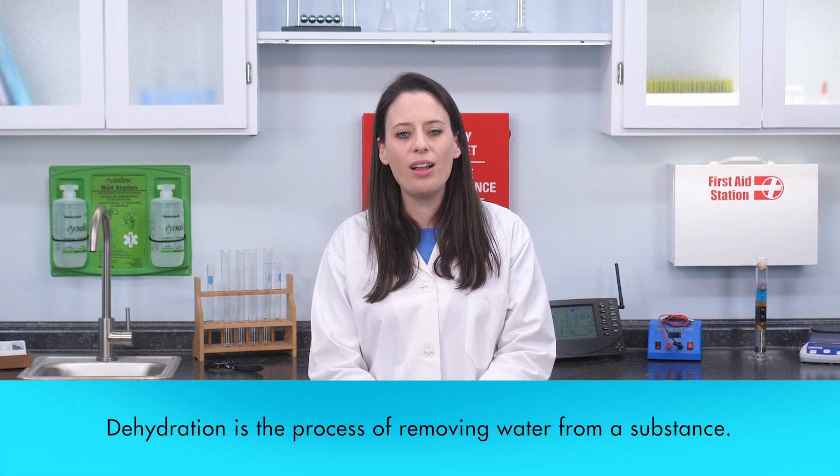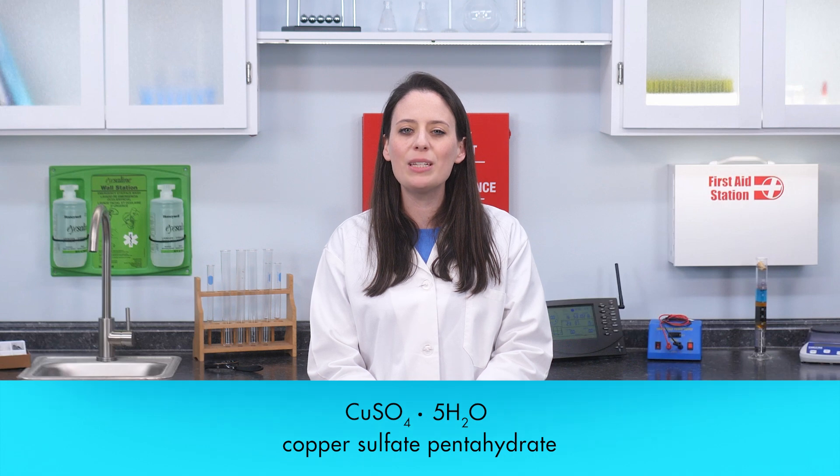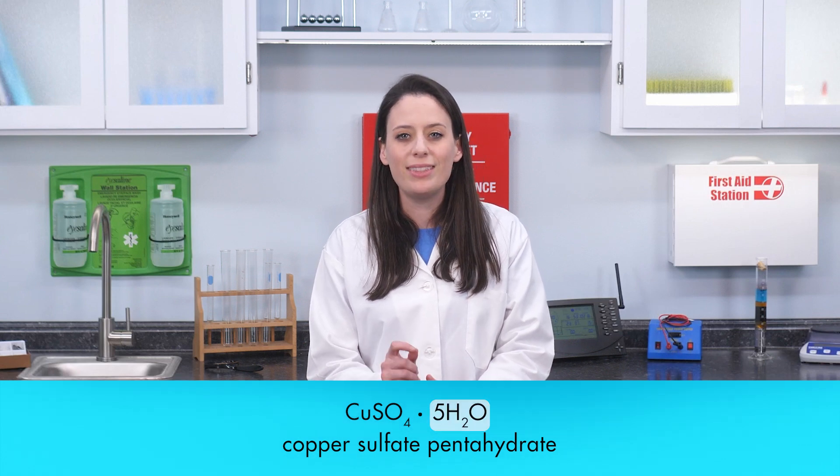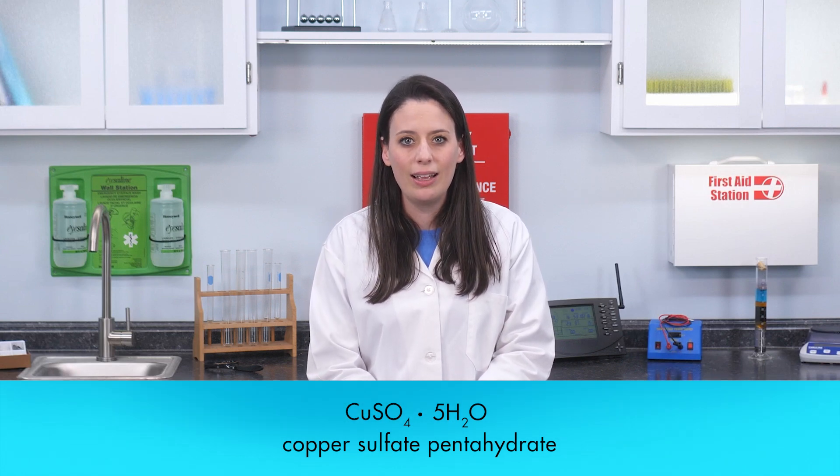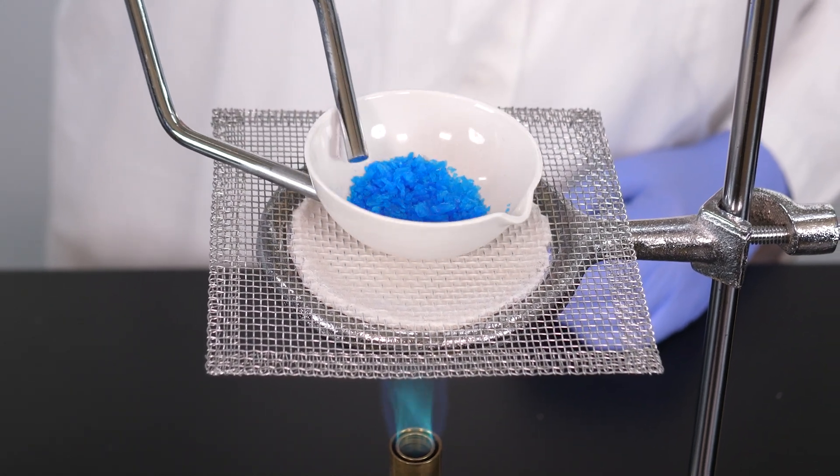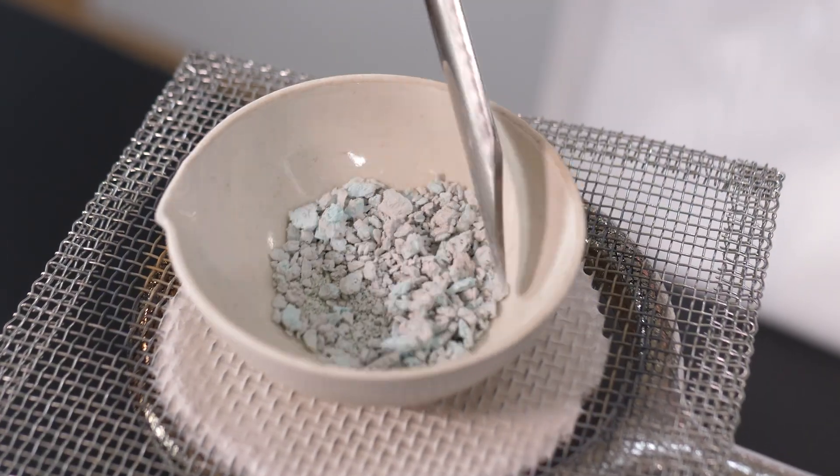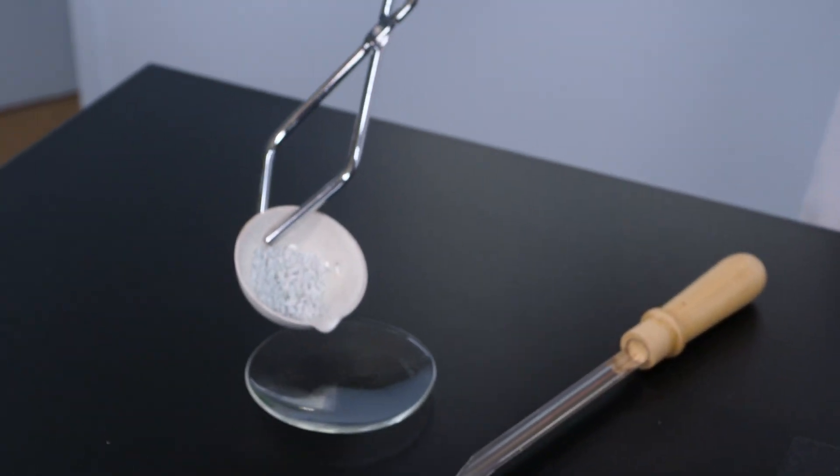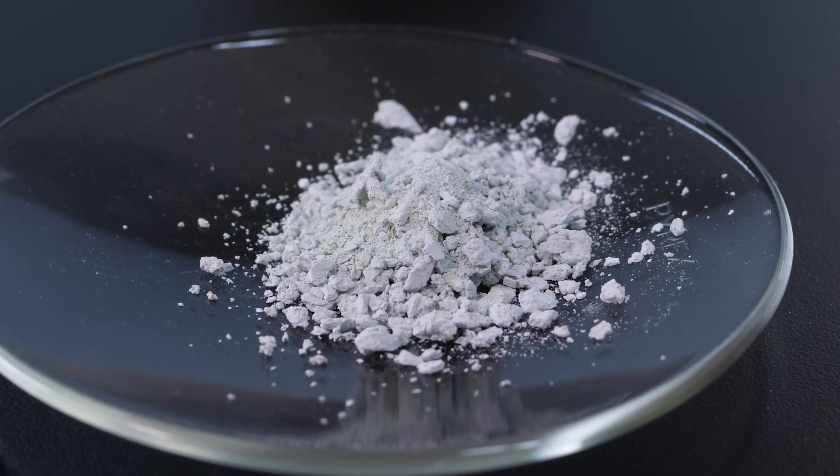We should also conduct a dehydration test. Dehydration is the process of removing water from a substance. In this case, let's look at the chemical formula for copper sulfate pentahydrate. Notice that part of the formula is 5H2O. This means that water molecules are contained in the formula for copper sulfate pentahydrate. By heating copper sulfate pentahydrate crystals in an evaporating dish, we can cause the water to evaporate. As the water evaporates, the crystals will turn white. When all the water has evaporated, only a residue of white, crystalline substance remains. This is consistent with anhydrous copper sulfate.